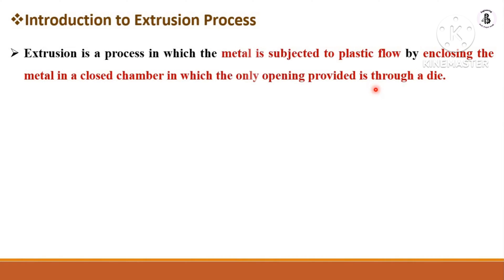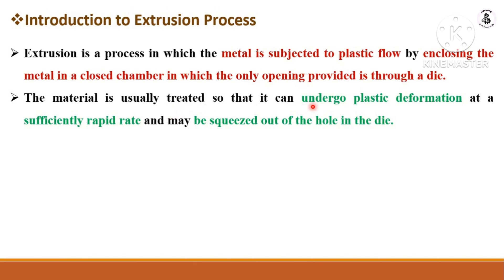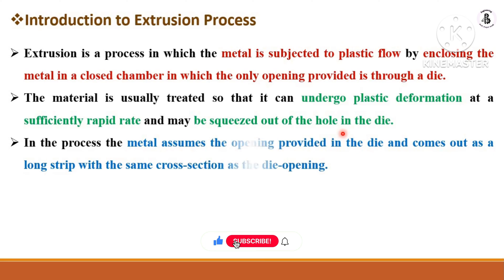Basically, the extrusion process involves plastic flow of metal enclosed in a closed chamber, where one side opens into a die, making complicated or required shapes. The metal undergoes plastic deformation at a sufficiently rapid rate and may be squeezed out through a hole into the die, coming out as a long strip with the same cross-sectional area as the die opening.